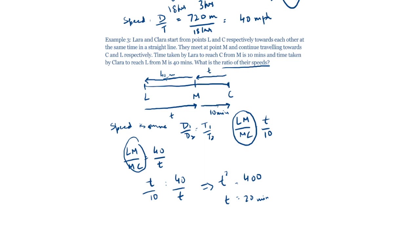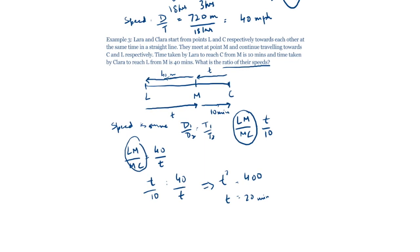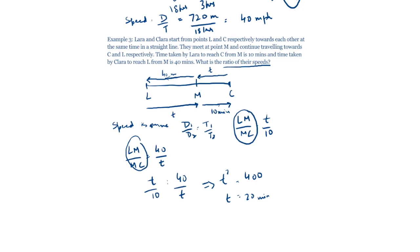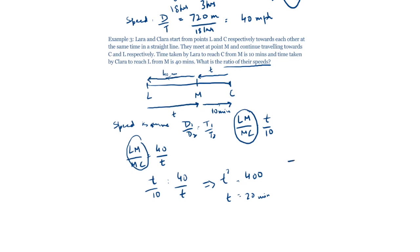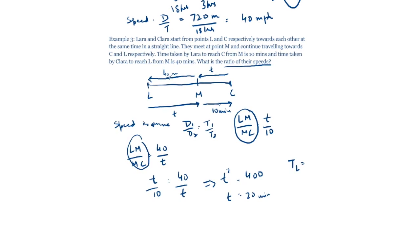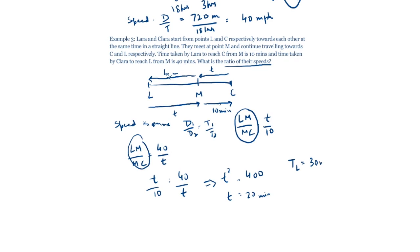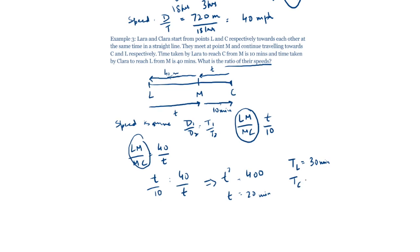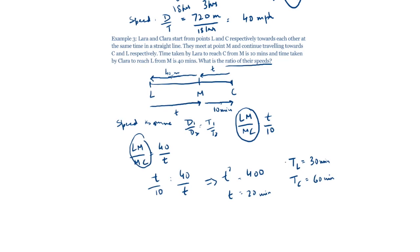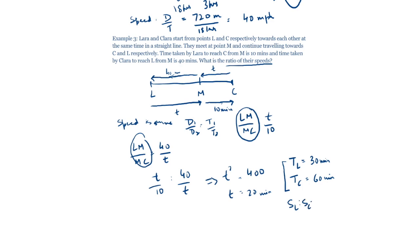Both Lara and Clara covered the full distance LC. Lara's total time is 20 + 10 = 30 minutes; Clara's total time is 20 + 40 = 60 minutes. The time ratio is 1:2. Since distance is constant, the speed ratio of Lara to Clara is 2:1.